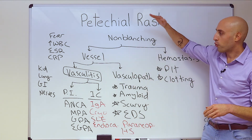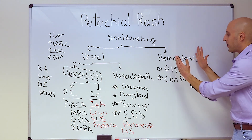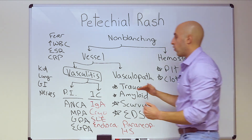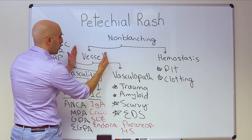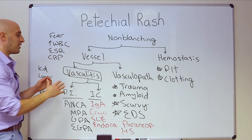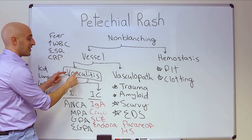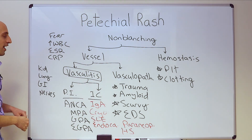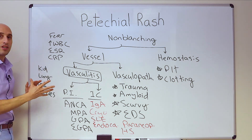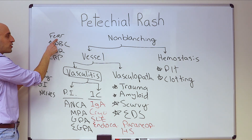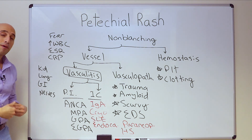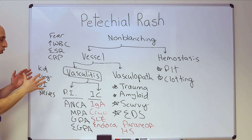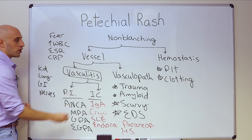Let me summarize. When you're approaching the petechial rash, ask yourself: are there any issues with the hemostasis system — platelets, clotting factors? If no — or even if so — are there issues with the vessel? When you get to the vessel, you need to distinguish inflammatory vasculitis from non-inflammatory vasculopathy. We discussed examples of vasculopathy, and then when considering vasculitis we ask: is the patient inflamed, as manifested by fever and laboratory abnormalities? Does the patient have palpable purpura pointing to vasculitis? And once we get to vasculitis, we can break it down into pauci-immune and immune complex mediated.